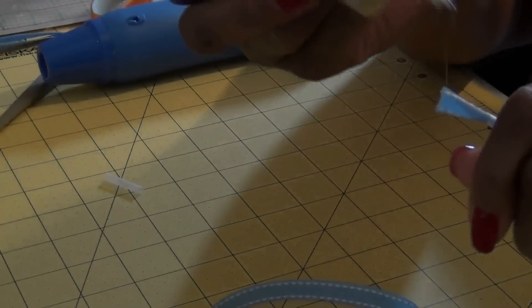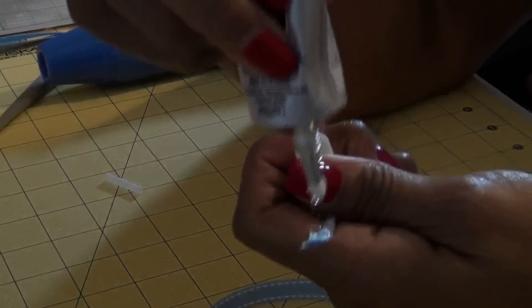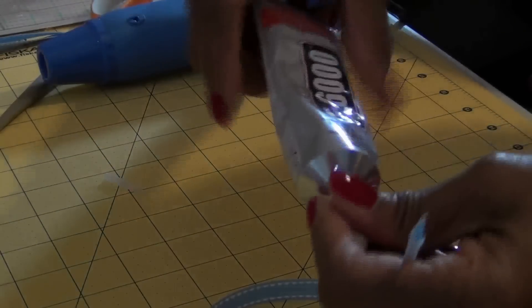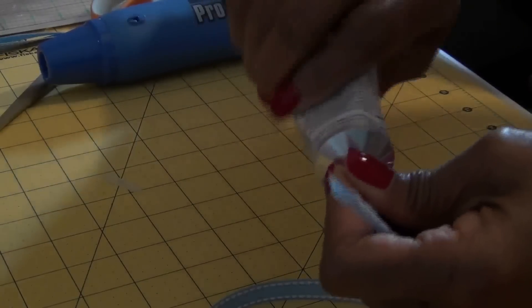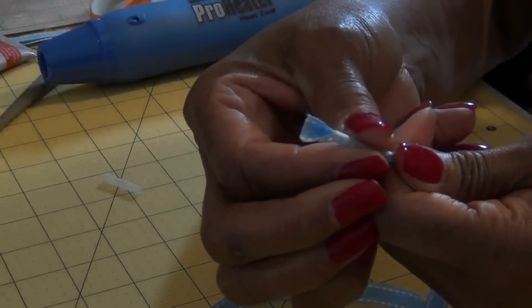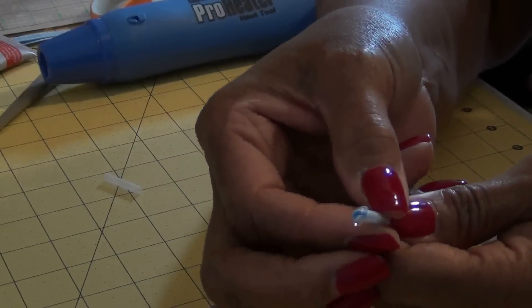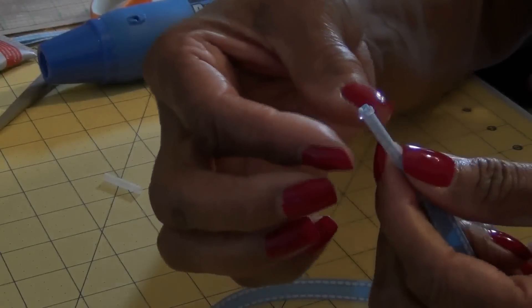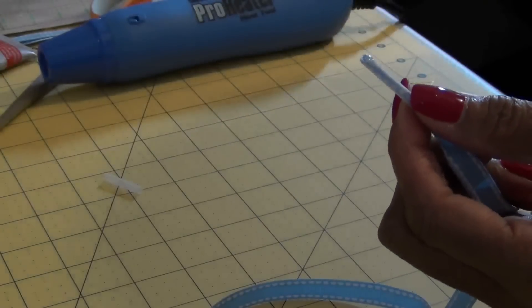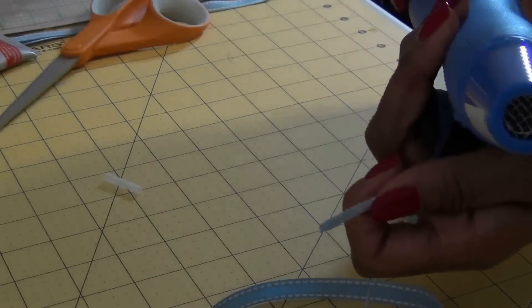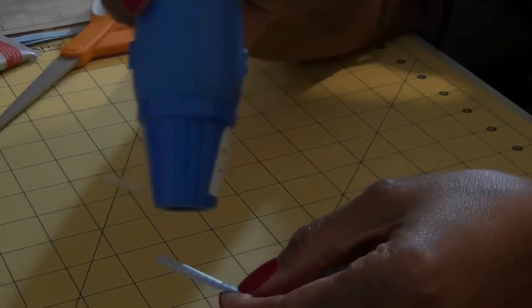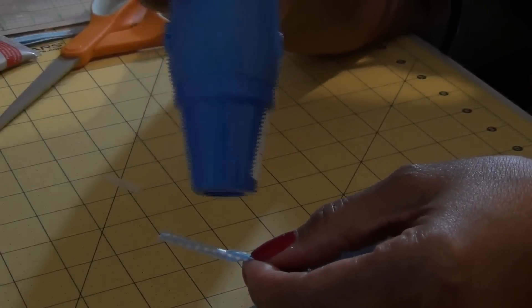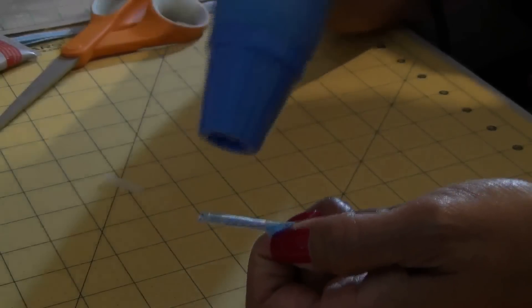Now I'm going to take my e6000 and put just a dab of it on the outside of the ribbon. Then I'm going to pull the tube back down over it. Just pulling the tube right back down over the glue. You can wipe off the excess. Now you're going to use your heater. Just turn it on.